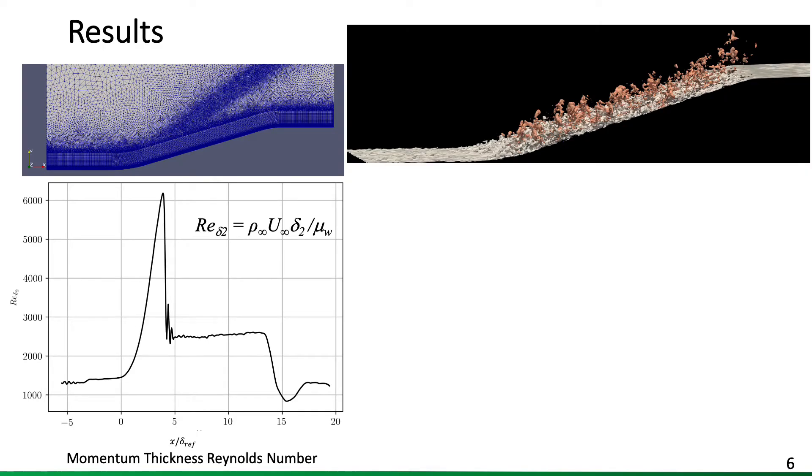Now focusing on the Reynolds number distribution throughout the domain, as I previously alluded to, see an incoming Reynolds number of around 1,300, roughly a 5x increase in Reynolds number, followed by a drop throughout the ramp. It stays mostly constant, similar behavior to the wall pressure.